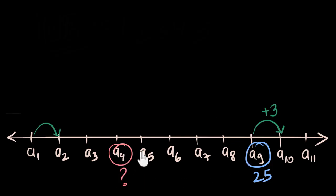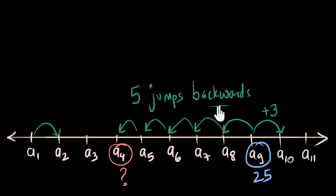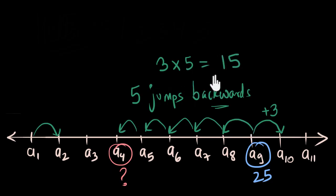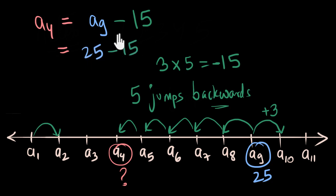We have the 9th term and want to reach the 4th term. Because the 4th term is to the left of A9, we are going to jump left, not right. From A9: 1 jump to A8, then 2, 3, 4, and 5 — so 5 jumps backwards. These jumps are in the opposite direction, so I'll write 5 jumps backwards. If each jump is 3 units, 5 jumps is 15 units back. So my 4th term equals the 9th term minus 15, which is 25 minus 15, giving us 10. That's our answer.